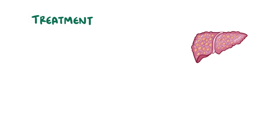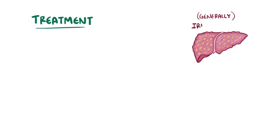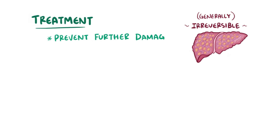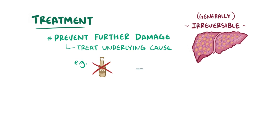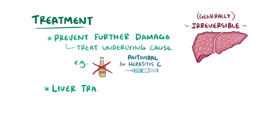As to treatment, generally the scarring in cirrhosis is irreversible, so it's important to prevent continued liver damage by identifying and treating the underlying cause — for example, stopping alcohol consumption or antiviral treatment for those with hepatitis C. With advanced cirrhosis where the liver stops functioning, a liver transplant might be needed.